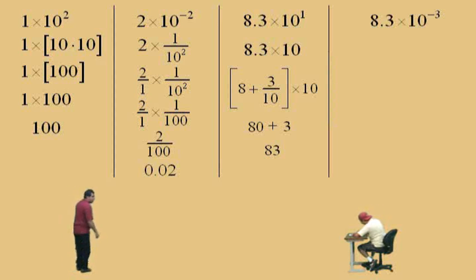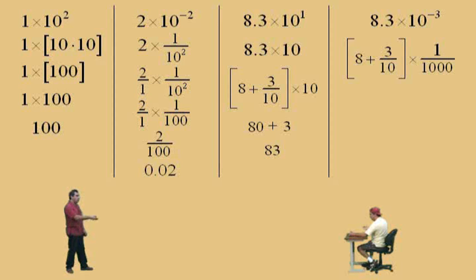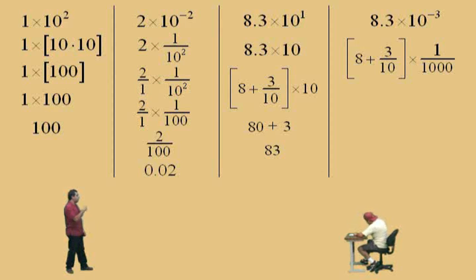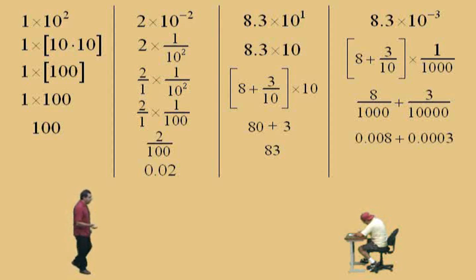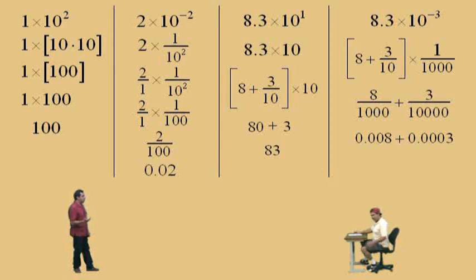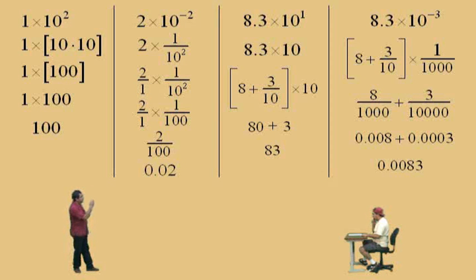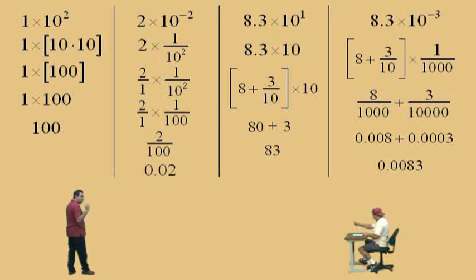Eight point three times ten to the negative three — ten to the negative three means one over a thousand. Eight point three means eight plus three tenths, multiplied by one over a thousand. Using the distributive property: eight times one over a thousand is eight over a thousand, and three tenths times one over a thousand is three over ten thousand. Written as decimals: eight over one thousand is 0.008, and three over ten thousand is 0.0003. Adding them together gives 0.0083. So 8.3 times ten to the negative three is scientific notation for 0.0083. There is a pattern to these decimals — we'll get to that.